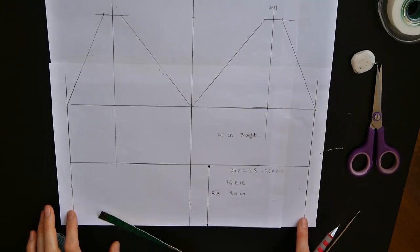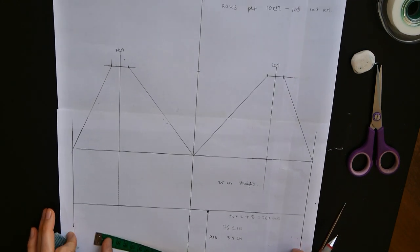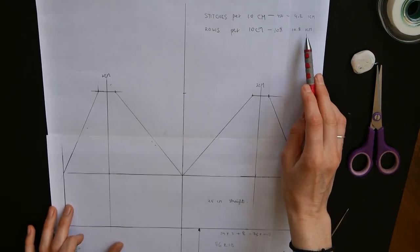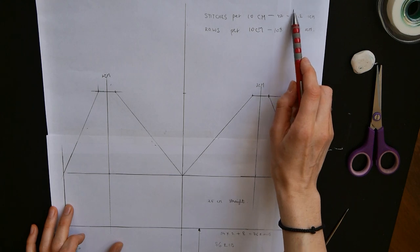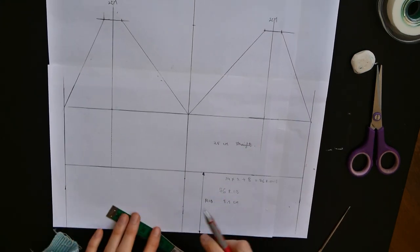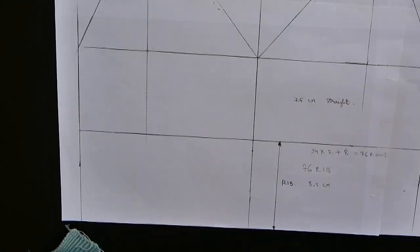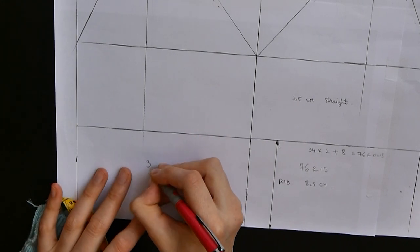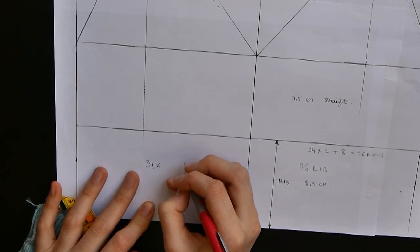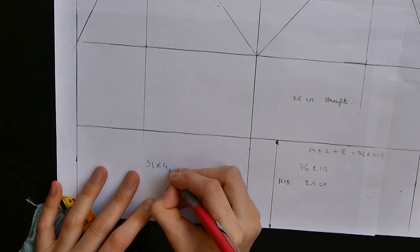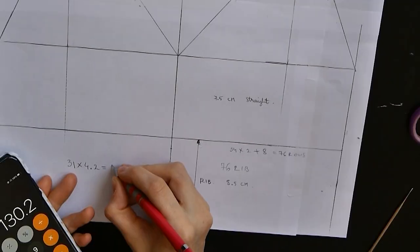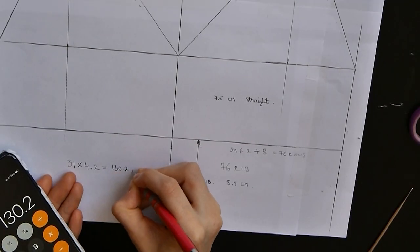To find out how many stitches I have to cast on, it's very simple once I know my gauge. So I know that my width of the garment is 31 centimeters in total and I also know that I have 4.2 stitches per 1 centimeter. So I'm going to calculate 31 times 4.2 and that is 130.2, so I have to cast on 130 stitches.